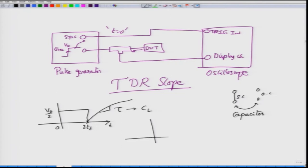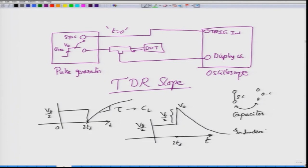Suppose instead you receive a voltage that shows a jump upward of V0/2 at time 2Td, so that the total voltage equals V0. A waveform that jumps up to V0 in this manner corresponds to an inductive load.